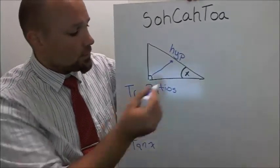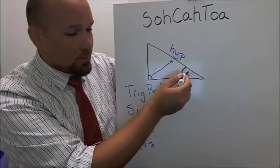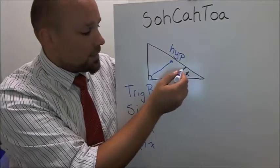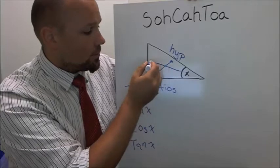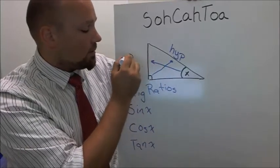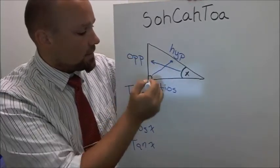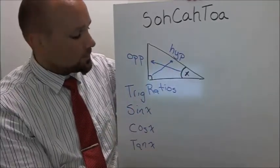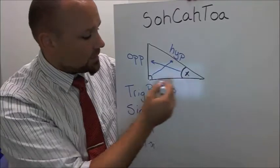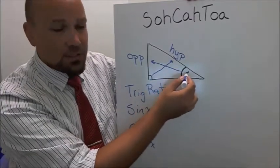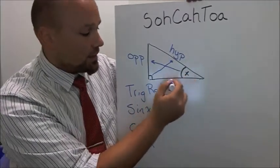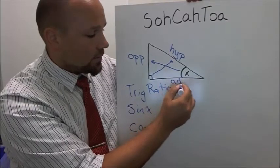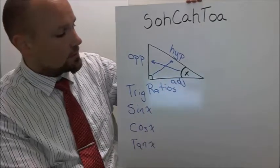Now also, the angle that we're talking about points to a different side. That angle points to what we call the opposite side. So see how this side is actually opposite of that angle? So we call it opposite. And finally, there's one side that's left over, and that side happens to be adjacent or next to the angle. So that side we call adjacent.